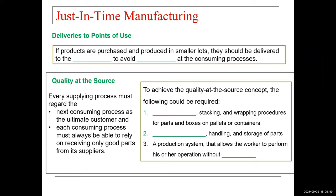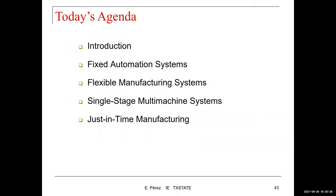Deliveries to the point of use are essential when products are purchased and produced in smaller lots, to avoid stockouts at consuming processes. Quality at the source means every supplying process regards the next consuming process as the ultimate customer, and each consuming process must always receive only good parts from its suppliers. This requires proper packaging, stacking, and wrapping procedures, efficient transportation handling and storage, and a production system that allows workers to perform operations without wasted time.